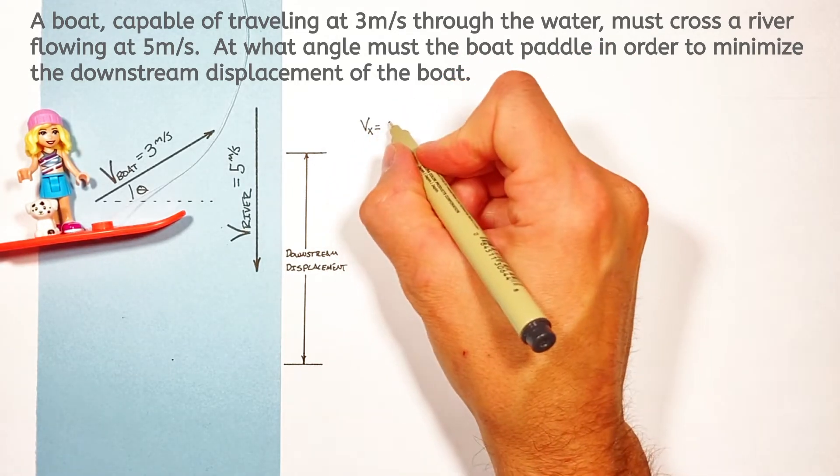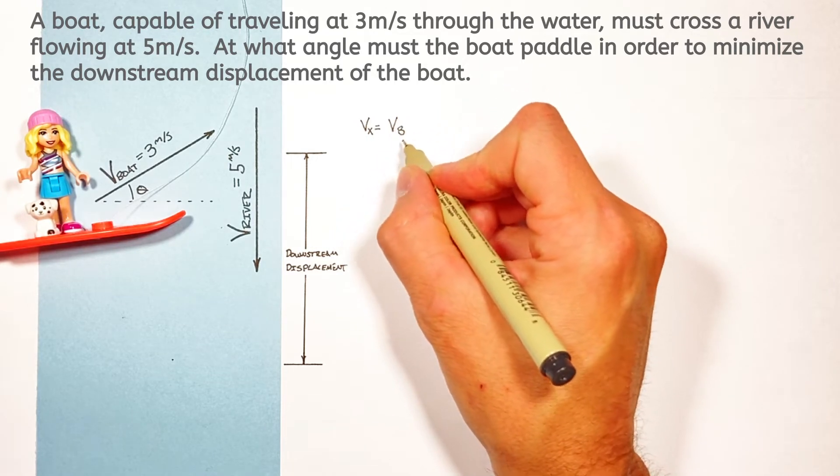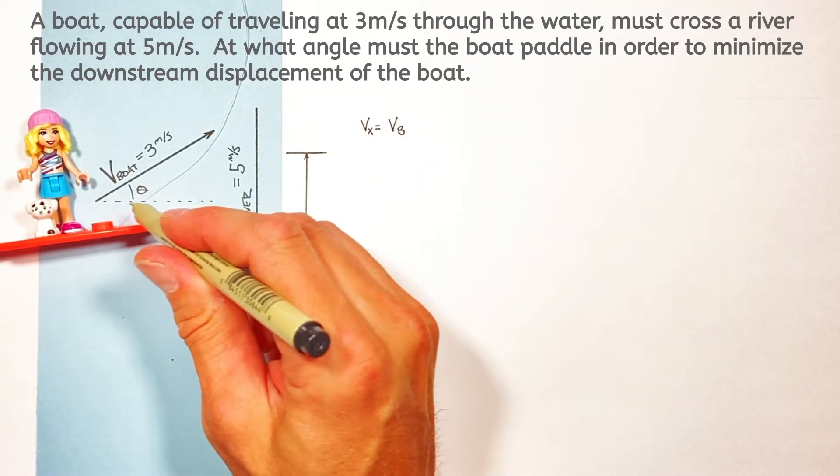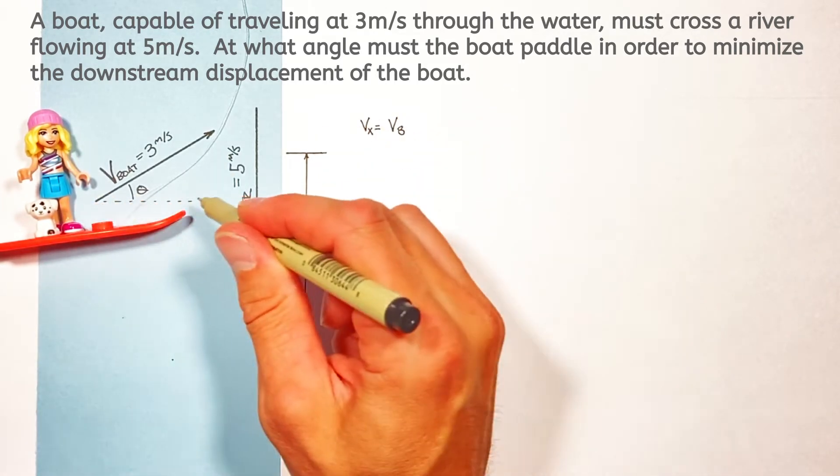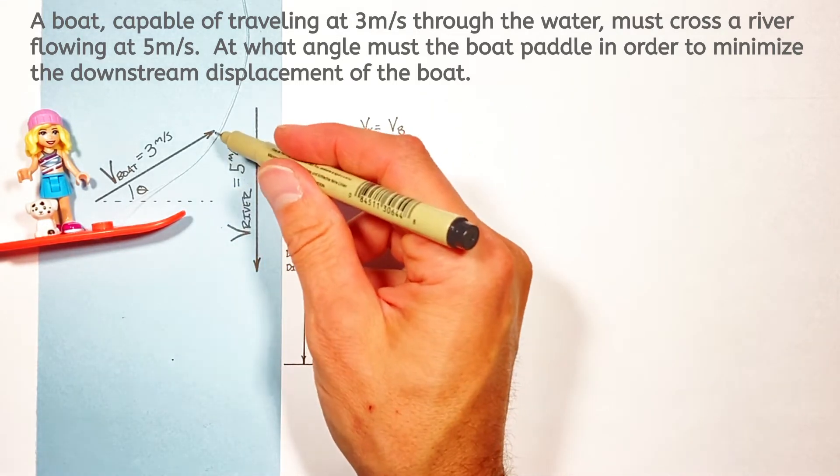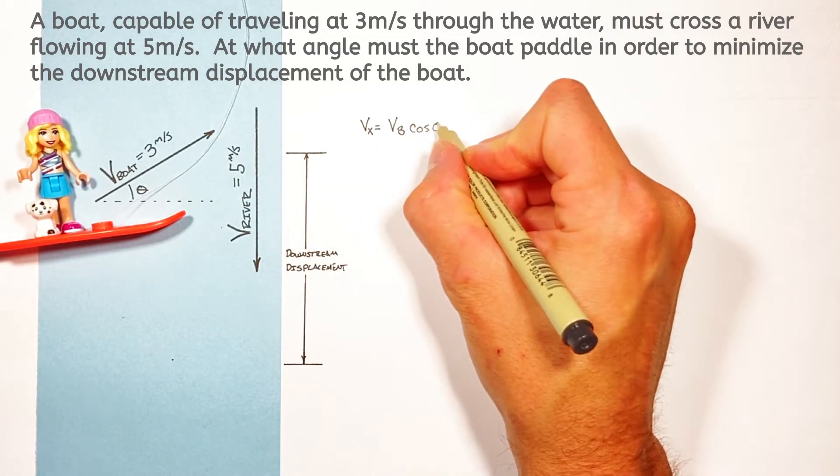Now in the X axis we're gonna have the velocity of the boat multiplied by the adjacent side of our right triangle or really the component of the boat's velocity which is across the river. It's gonna be cosine theta.